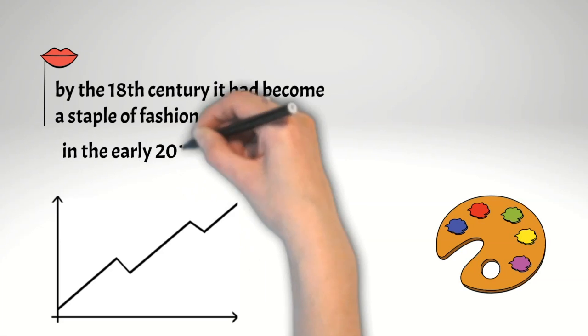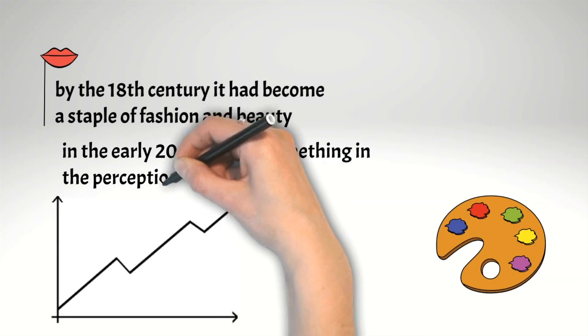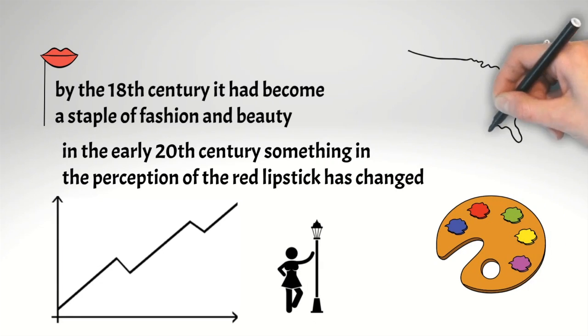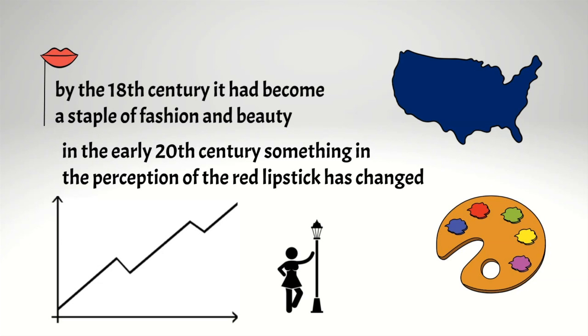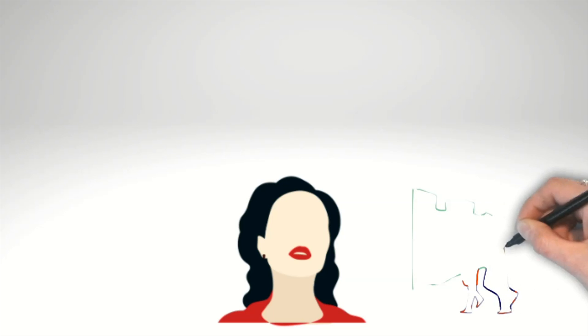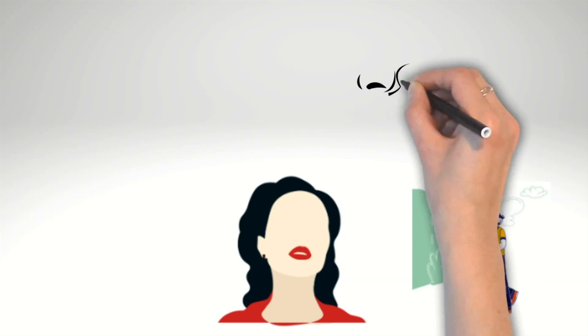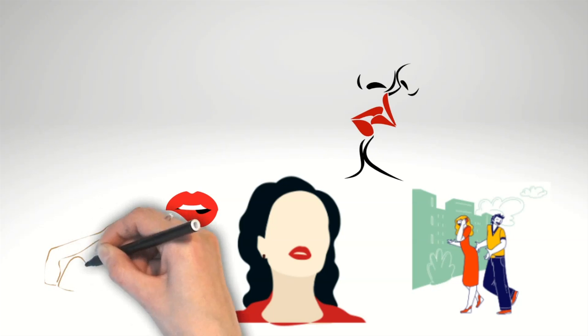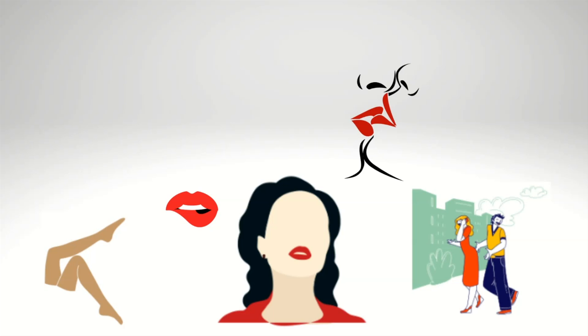But in the early 20th century, something in the perception of red lipstick has changed again, and again it was attributed to prostitutes or actresses. To the point that some states in the United States banned the use of red lipstick. The ban was rooted in the belief that wearing lipstick was a sign of loose morals and sexual promiscuity, and that women who wore it were engaging in scandalous behavior. Some people believed that the bright colors of lipstick were intended to mimic the color of the vulva, and that wearing it was a way for women to advertise their sexual availability.